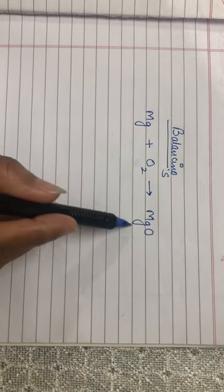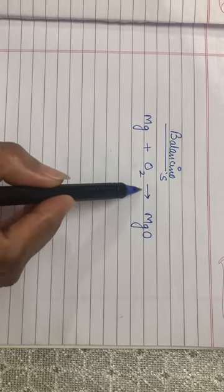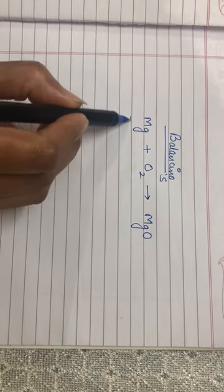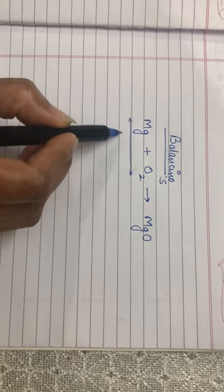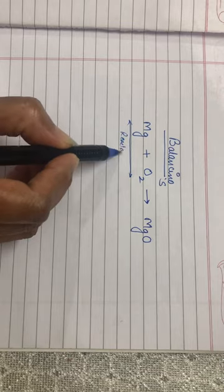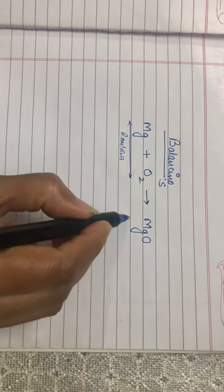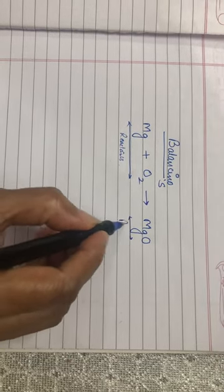Whenever we write a chemical equation, we use an arrow. Things which are written on the left hand side of the arrow are said to be reactants and those on the right hand side are products.